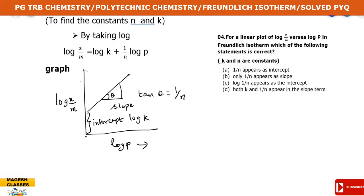Freundlich's isotherm can be represented graphically to find constants n and k. Starting from x by m equals k into p power 1 by n, taking logarithms gives: log(x/m) equals log k plus (1/n) log p. This is a linear equation of the form y equals mx plus c. The y-axis is log(x/m), the x-axis is log p, giving a straight line where the slope tan theta equals 1 by n, and the intercept gives log k. From this graph, both k and n values can be determined.